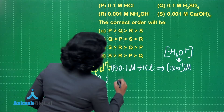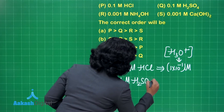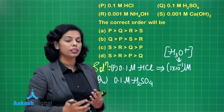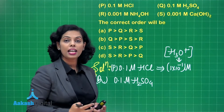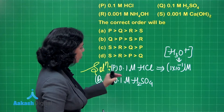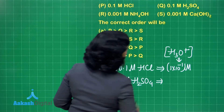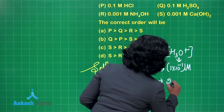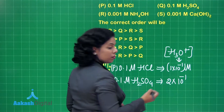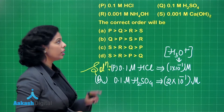For solution Q, 0.1 M H2SO4: one molecule of H2SO4 consists of 2 H⁺ ions, so 2 hydronium ions are produced. Therefore the concentration of hydronium ion becomes 2 × 10⁻¹ M.